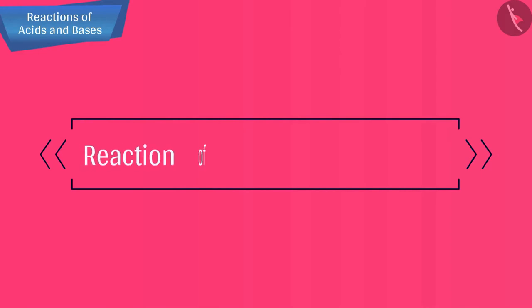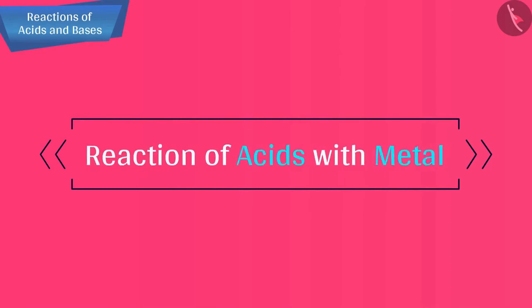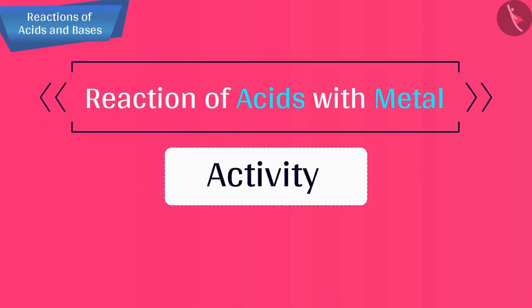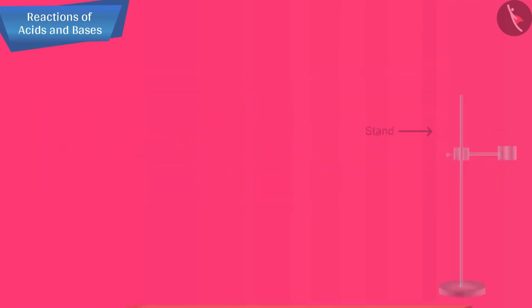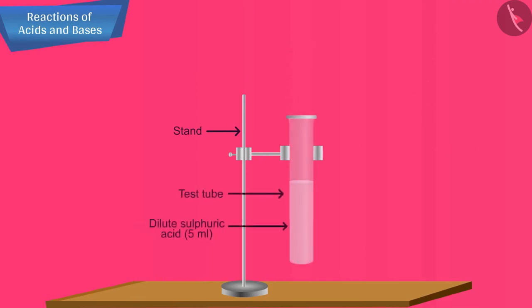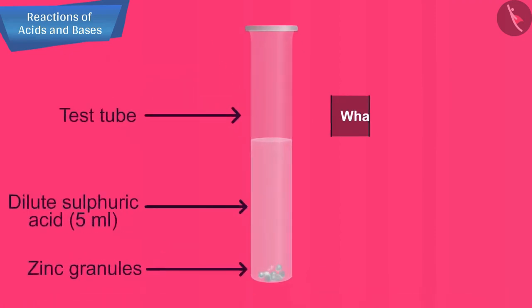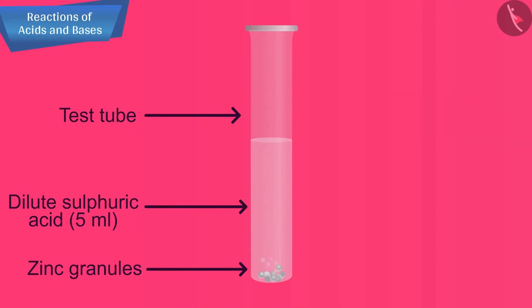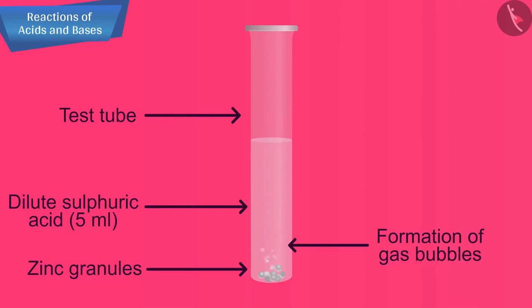Let us now begin with the first reaction, that is reaction of acids with metals. Let us see how a metal reacts with acids with the help of an activity. Set the apparatus as shown in the figure. Take about 5 ml of dilute sulphuric acid in a test tube and add a few pieces of zinc granules to it. What do you observe on the surface of zinc granules? You will observe the formation of gas bubbles on the surface of zinc granules.